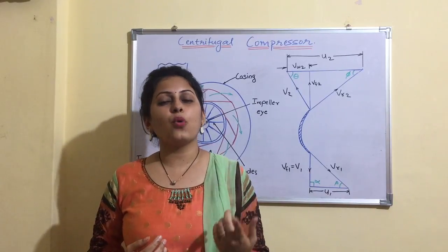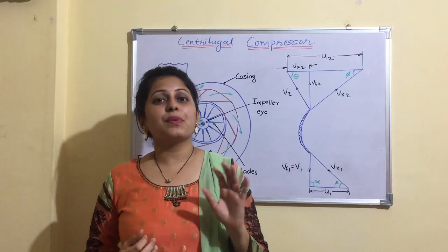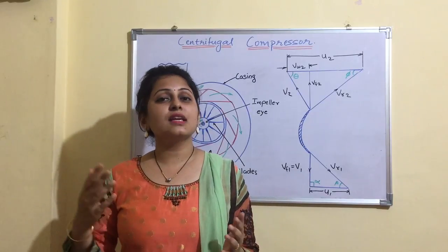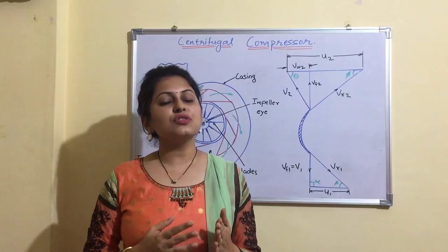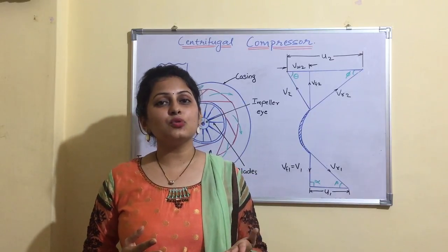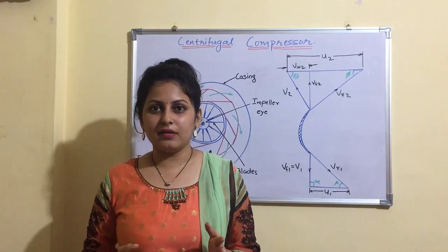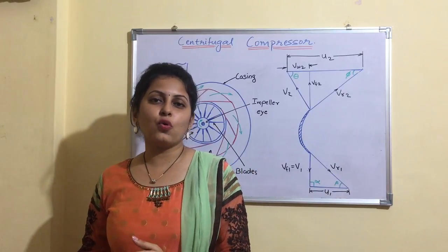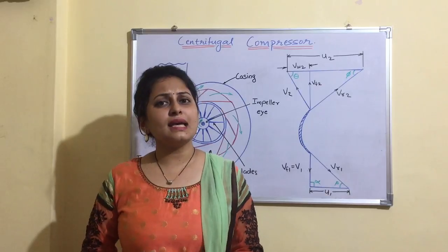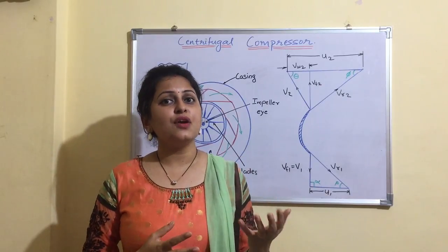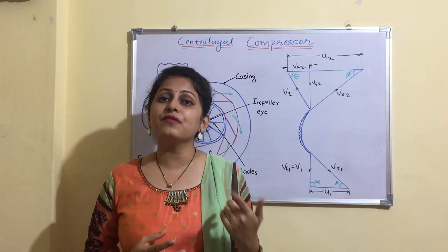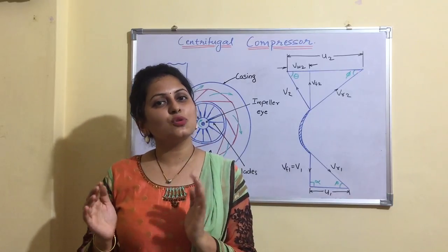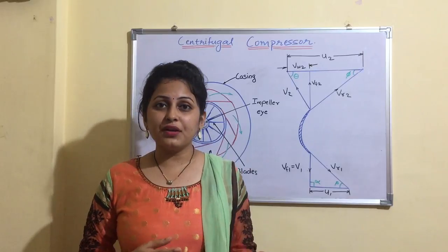The first important point is pressure ratio. Pressure ratio is higher in case of reciprocating compressor — it ranges from about 4 to 7 — and in case of rotary compressor it is low, ranging from 3 to 5. The second parameter is the flow of delivery air: it is intermittent flow in case of reciprocating compressor and continuous flow in case of rotary compressors. Regarding size, it is bulky for reciprocating compressor due to the piston and cylinder arrangement, but compact for rotary compressors with rotor and stator.